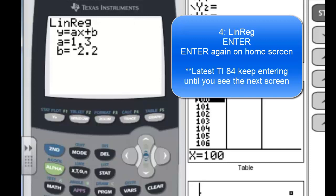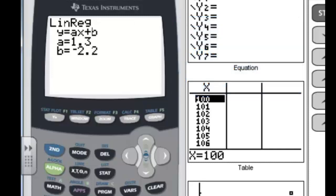And then you see the equation that best fits all that data. Now let's go and put that into our y equal screen. Notice we'll have to write this down. It's y equals ax, and a being 1.3, plus b, and our b, that's the y intercept, being negative 2.2. So write that down.